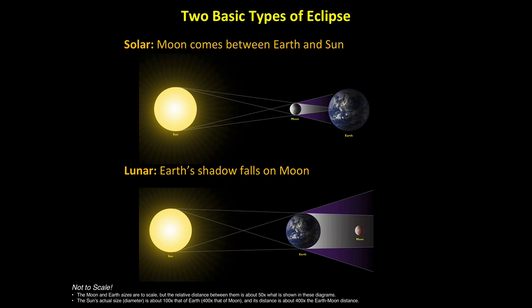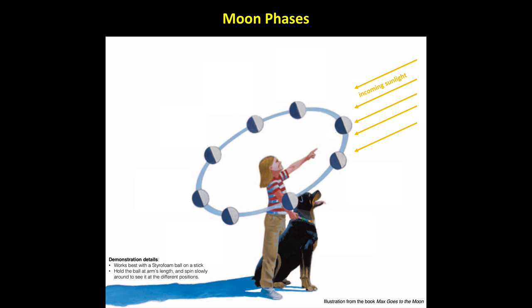Now that you know the two basic types of eclipse, our next step is to understand when eclipses occur. To do that, we must first review why we see phases of the Moon. An easy way to understand Moon phases is to take a ball outside on a sunny day. Pretend the ball is the Moon and your head is the Earth, and move your Moon ball around you like the real Moon orbits Earth. This painting shows the ball, or Moon, as it would appear in eight different positions as it moves around you. Notice that no matter where the Moon is located, the half facing the Sun is sunlit, while the other half is dark. From your viewpoint in the middle, you'll see different portions of the sunlit and dark halves at different positions. That is why we see phases of the Moon.